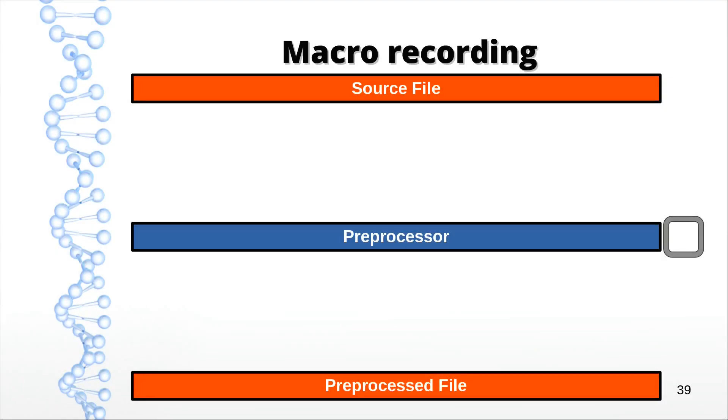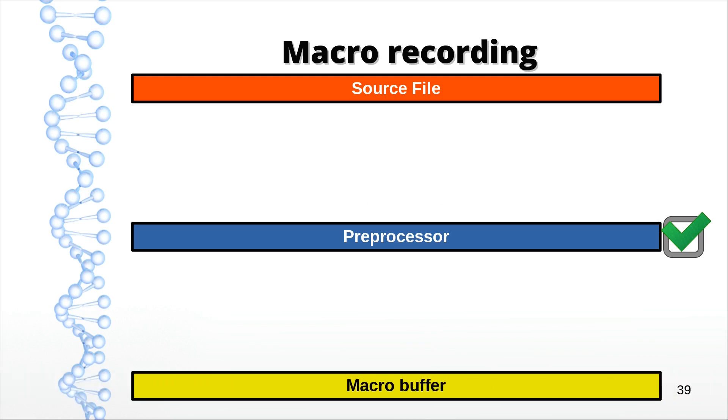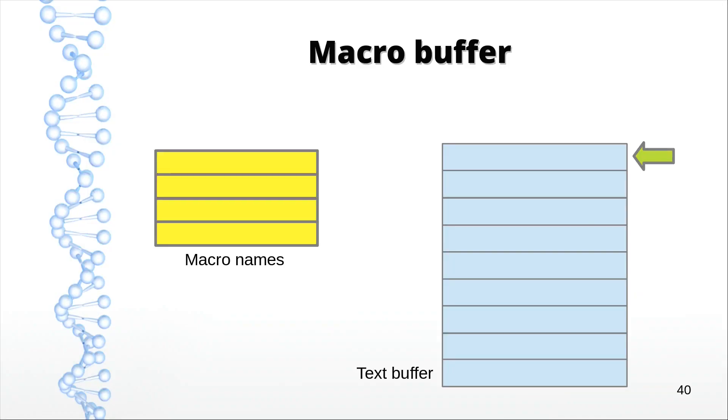Let's suppose we feed our preprocessor the colon macro keyword. All we have to do is signal we're in a special mode now by setting a flag, and switch the output destination from our output file to a macro buffer. The macro buffer consists of two parts: a structure for storing the names, and a contiguous string buffer for the content. The next thing that is parsed is the name of the macro. We store that one in the macro name structure, and along it the current value of the string buffer pointer, which in this case is pointing to the very beginning of the buffer.